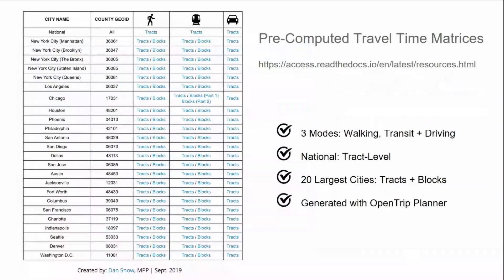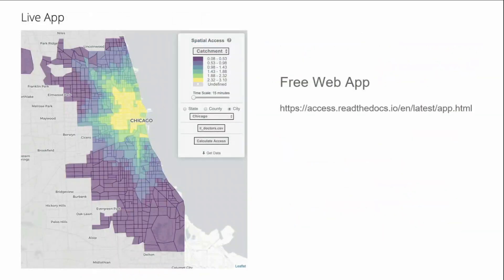Dan Snow and our team used the dockerized OpenTripPlanner computations to produce pre-computed travel time matrices that we're also making available for free as part of this project. This is done for three modes of travel — walking, transit, and driving — at the tract level for the whole nation, and then tracts and blocks for the 20 largest cities.